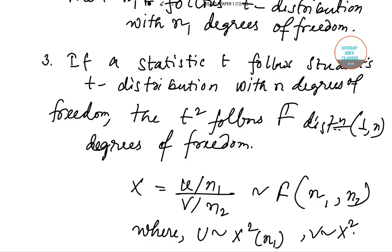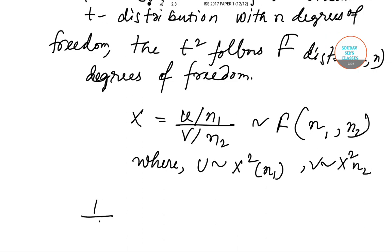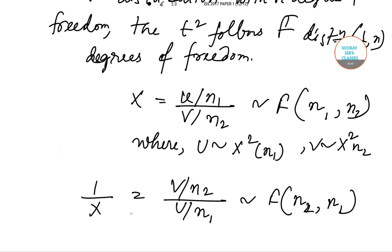another chi-square distribution with n2 degrees of freedom. Now 1/X = (V/n2)/(U/n1), which follows F with n2 and n1. So option 1 is correct.